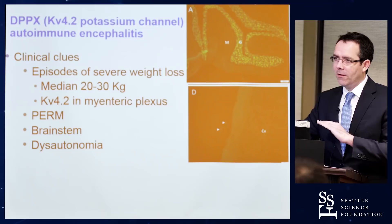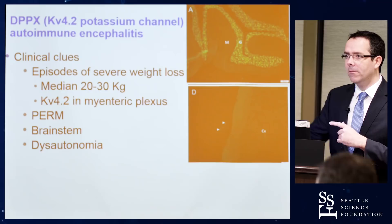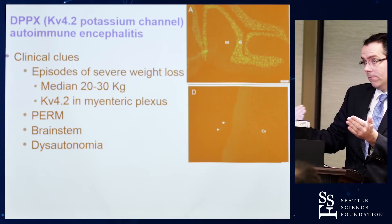You are better off ordering syndromic panels, such as our autoimmune dementia and autoimmune encephalopathy panels, which include the AMPA receptor antibody. Sometimes cell-based assays have greater sensitivity — so you may miss NMDA receptor antibodies if you only order a paraneoplastic panel rather than the autoimmune encephalitis panel, since cell-based assays are not automatically included.